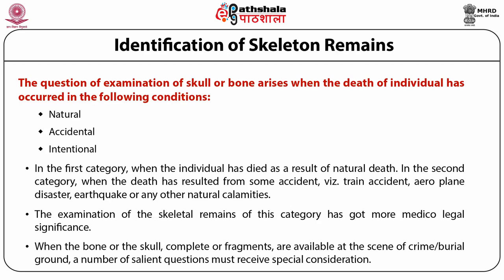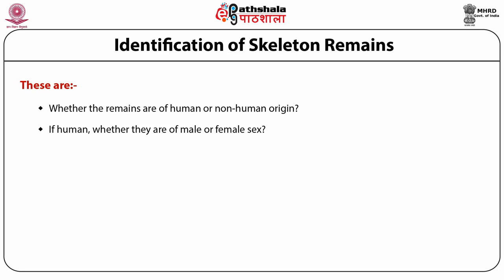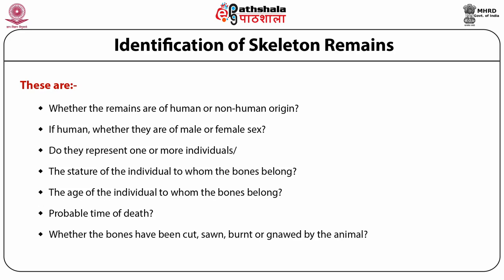When bones or a skull, complete or fragmentary, are available at the scene of crime or a burial ground, a number of salient questions must receive special consideration: whether the remains are of human or non-human origin; if human, whether they are male or female; whether they represent one or more individuals; the stature of the individual; the age; the probable time of death; whether the bones have been cut, sawn, burnt, or gnawed by animals; and the probable cause of death.